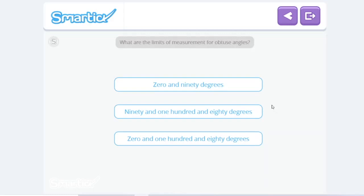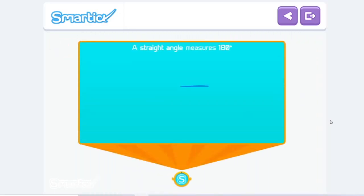So for an obtuse angle, it would be between 90 and 180 degrees. A straight angle measures 180 degrees. Any angle that measures more than 90 and less than 180 degrees is obtuse.